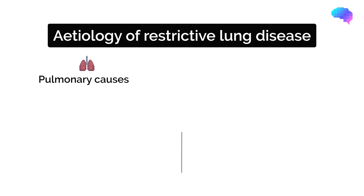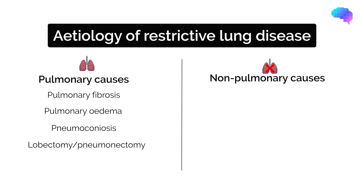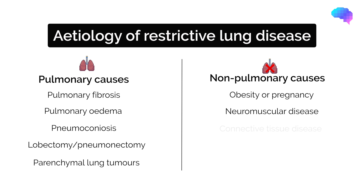There are many causes of restrictive lung disease, which can be broken down into pulmonary and non-pulmonary causes. Pulmonary causes include pulmonary fibrosis, pulmonary edema, pneumoconiosis, lobectomy or pneumonectomy, and parenchymal lung tumours. Non-pulmonary causes include obesity or pregnancy, neuromuscular disease, connective tissue disease, and skeletal abnormalities such as kyphoscoliosis.